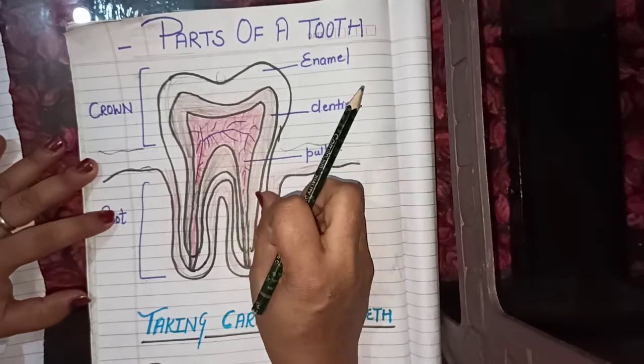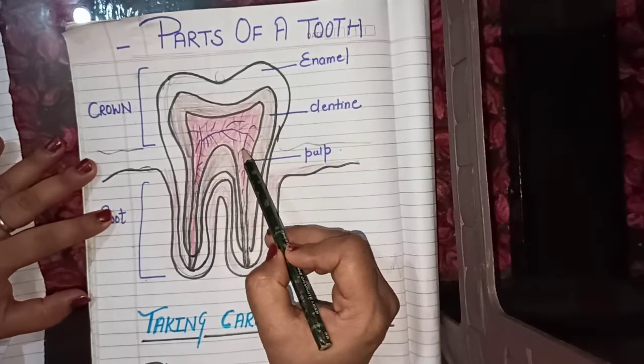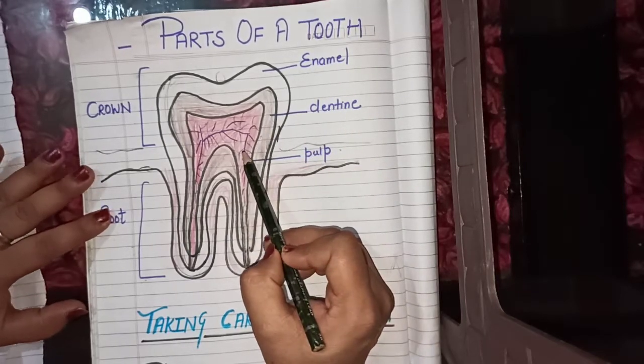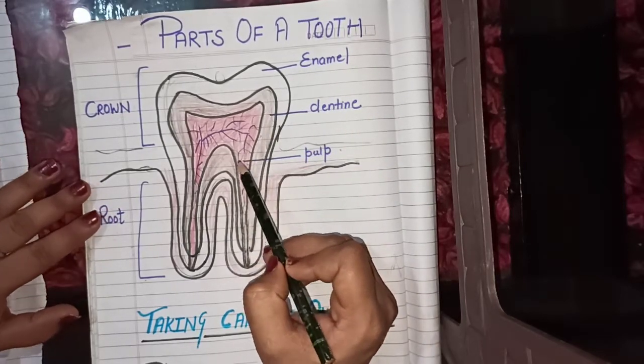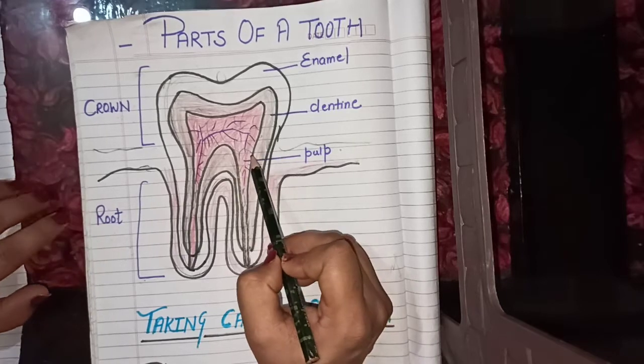Dentine is sensitive to hot and cold. Underneath the dentine there is another layer, that is pulp.